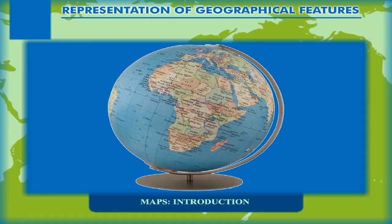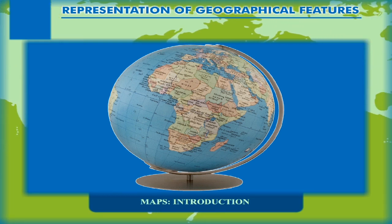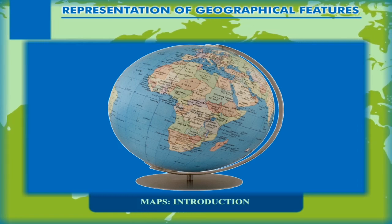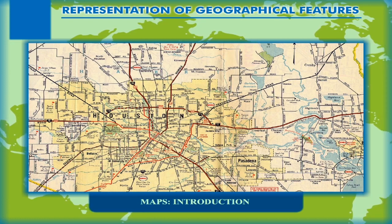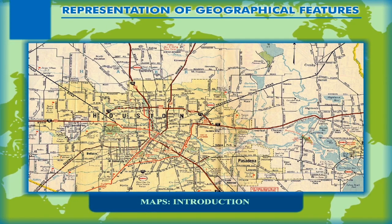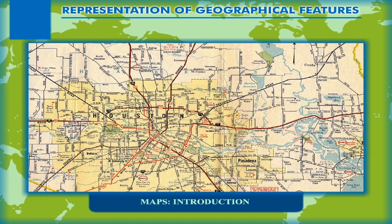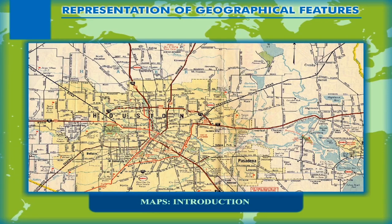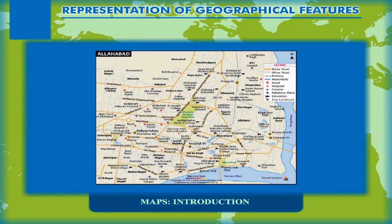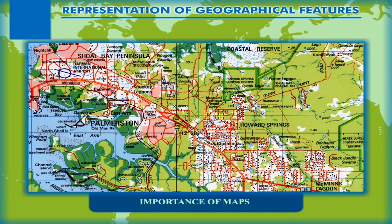However, as globes always show the entire earth, they cannot be used to depict any small area. Maps become useful for this purpose. They can show the entire earth or any part of it. Unlike globes, they can show small areas with detailed information, for example, a city map or a locality map.